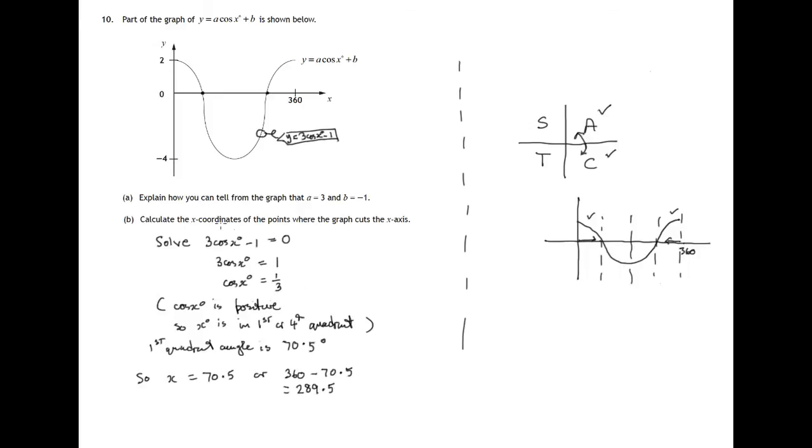So calculate the x-coordinates of the points where the graph cuts the x-axis. Well, the first one would be at 70.5. And the second one, we're just checking it makes sense in the diagram, 289.5. So these are the two required x-coordinates.